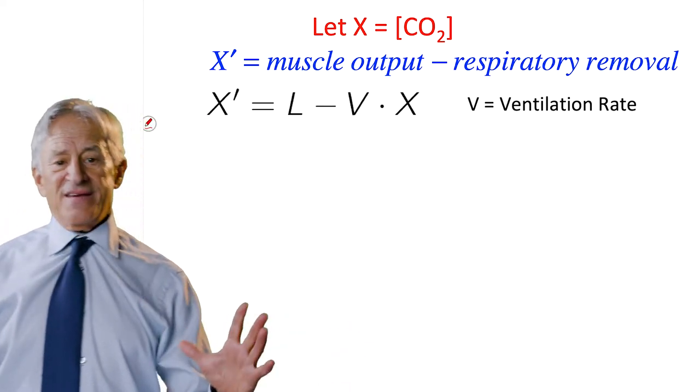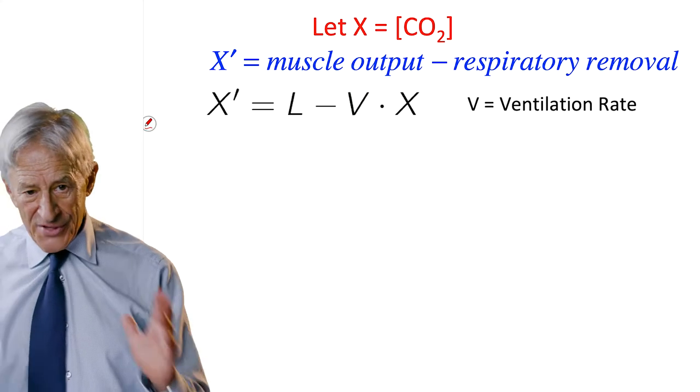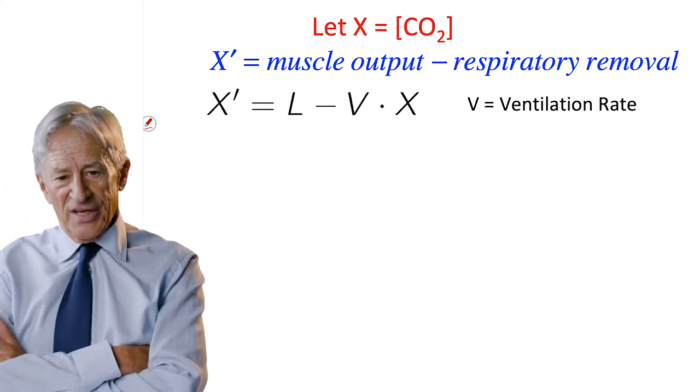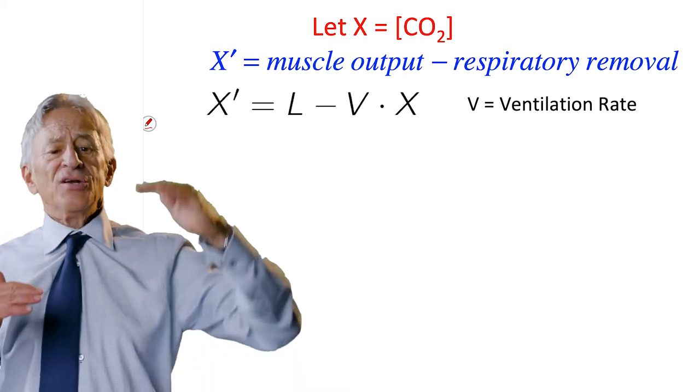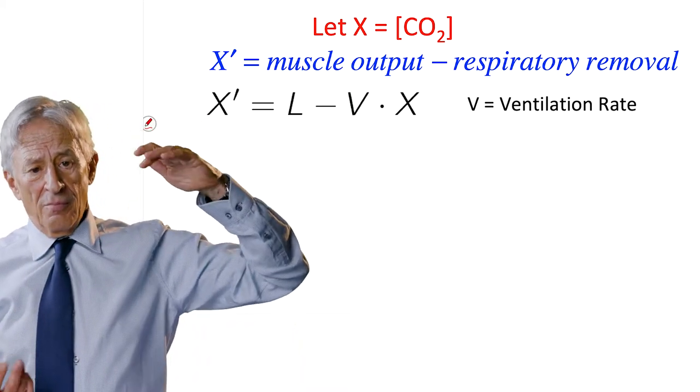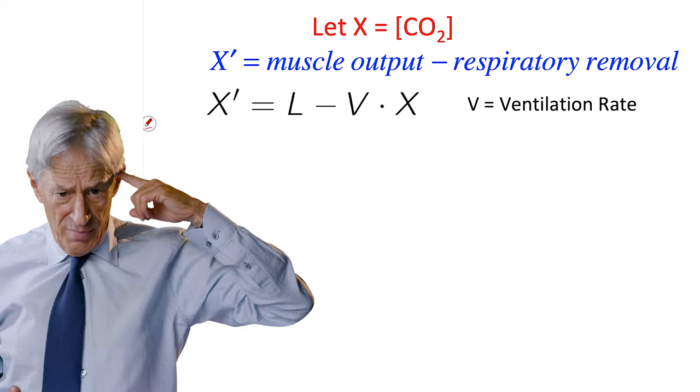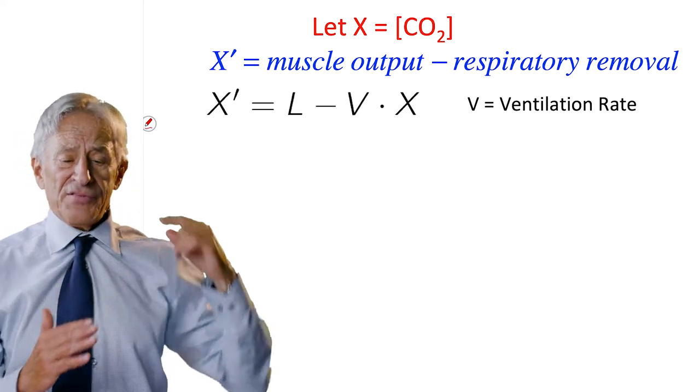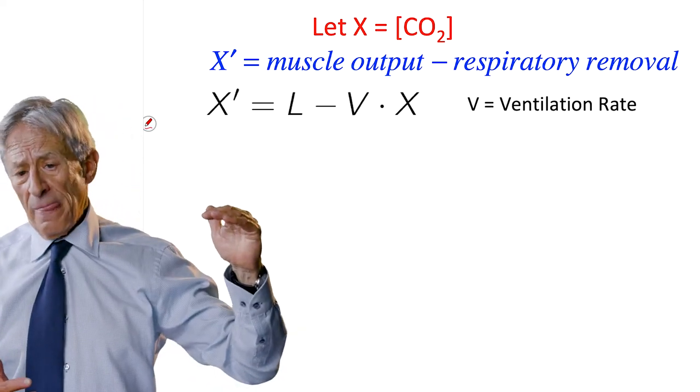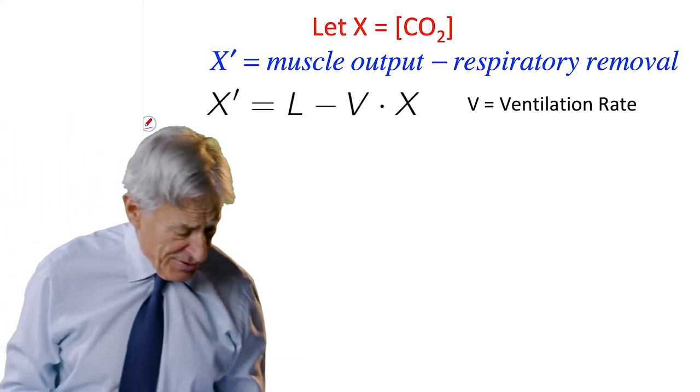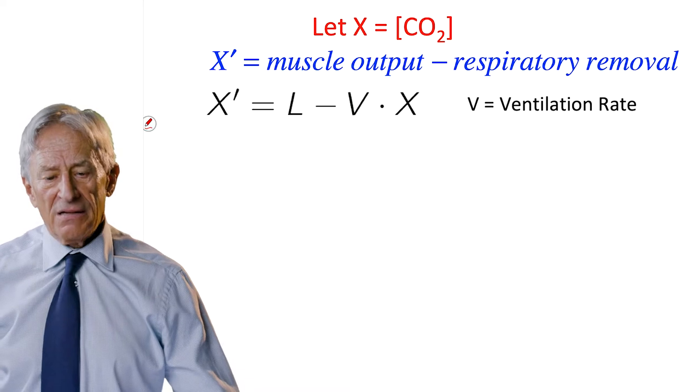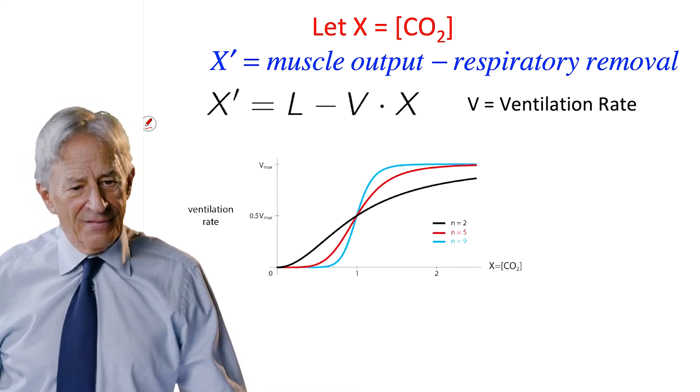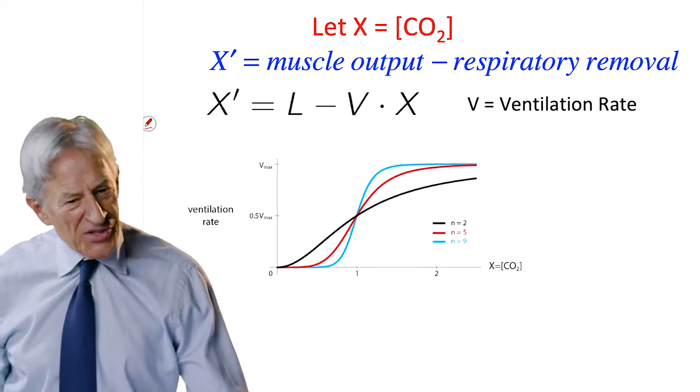Now, what is V? We still have to say something about the ventilation rate. How does the ventilation rate increase by the brainstem when it sees increasing amounts of CO2? So this was a series of famous experiments by the physiologist A.V. Hill. And this is what he found: a sigmoid.